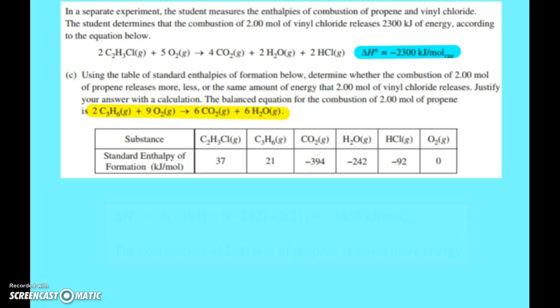Now, our last part, a nice little gimme here, I hope. A separate experiment, a student measures the enthalpies of combustion of both of the compounds. And we see that the combustion of two moles of vinyl chloride releases 2300 kilojoules per mole. So its delta H is negative 2300 kilojoules per mole. They gave us the delta H, the standard enthalpies of formation below. So now they want us to figure out the delta H for the combustion of two moles of propene. And then you also want to compare it, because it says determine whether the combustion is going to be more, less, or the same amount.